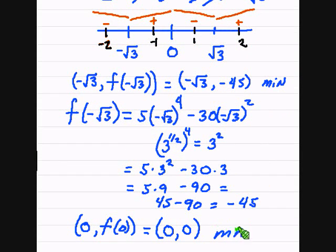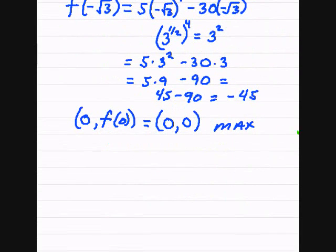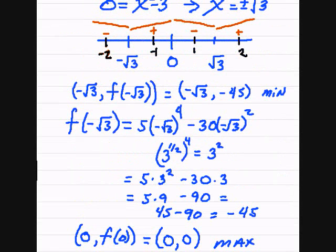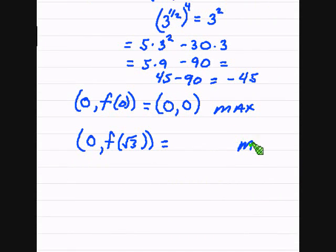And then we plug in negative square root of 3. And I'm not going to work this out. So, 0 comma f of square root of 3. I think I might have said negative. I'm going to say square root of 3. And you figure that out. But it is a minimum. So we'll label that as a minimum. Now, the second thing we want to do here is...